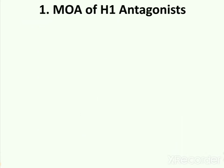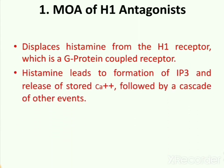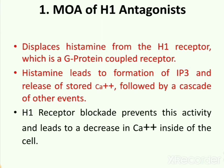Now we will understand the mode of action of H1 antagonists. H1 is a type of histamine receptor and it is a G protein-coupled receptor. When histamine binds to H1 receptor, it leads to formation of IP3 (inositol triphosphate) and release of stored calcium 2+ ions, followed by a series of other events. Formation of IP3 and release of stored calcium 2+ causes contraction of bronchial smooth muscles and some allergic reactions.